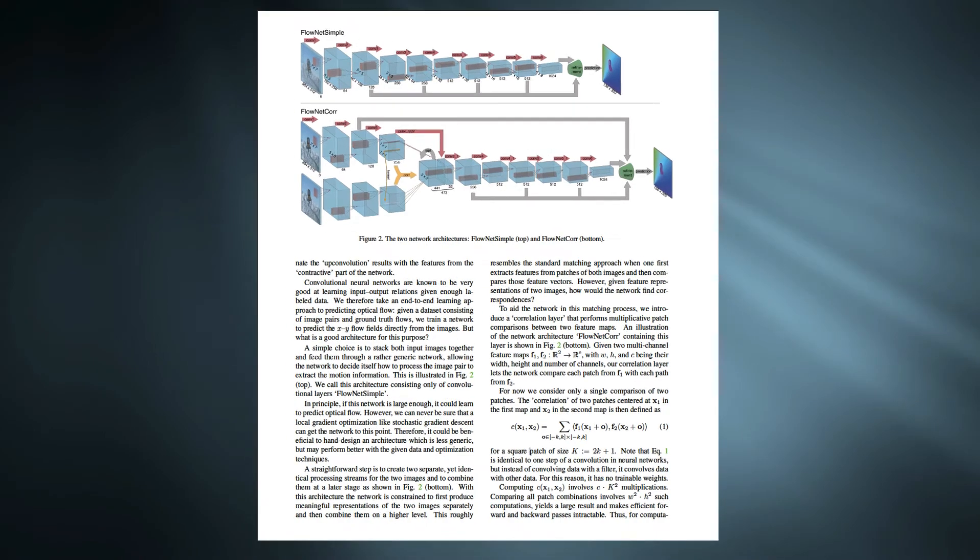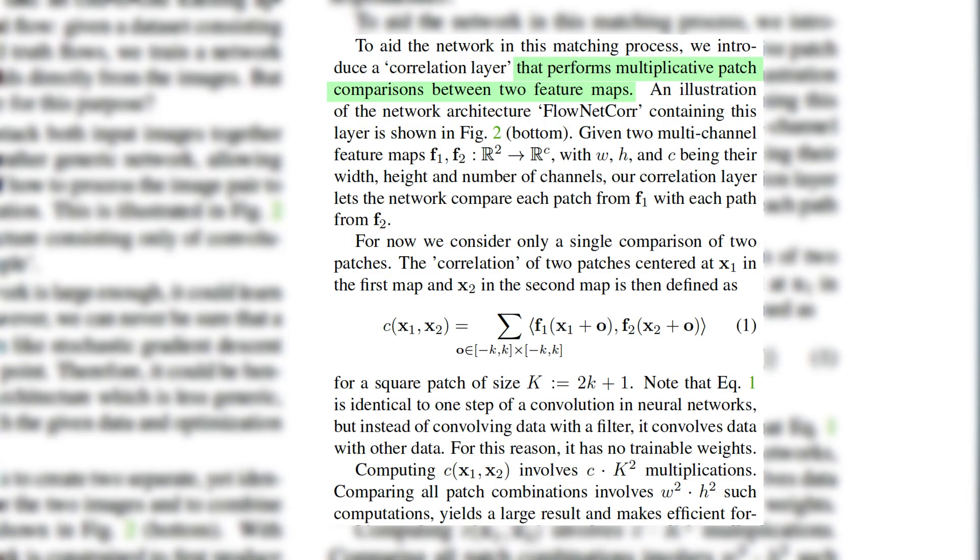According to the authors, this layer performs multiplicative patch comparisons between two feature maps. If f1 and f2 are two feature maps, then correlation operation is defined in this equation. This is basically a convolution operation between two feature maps.